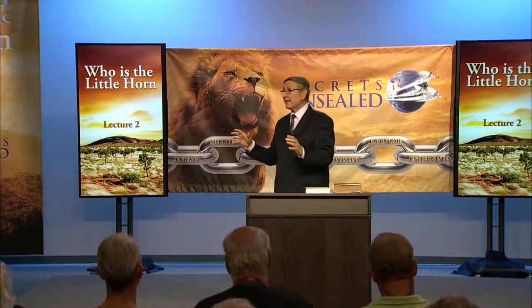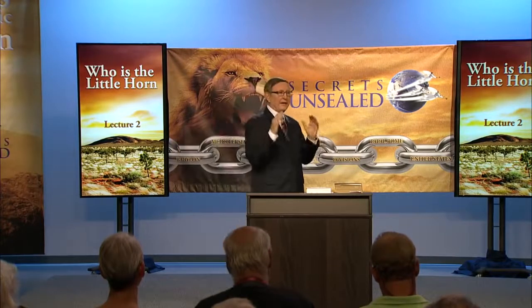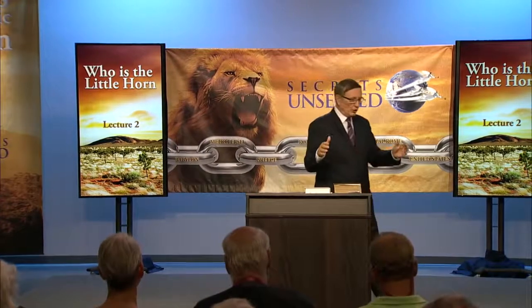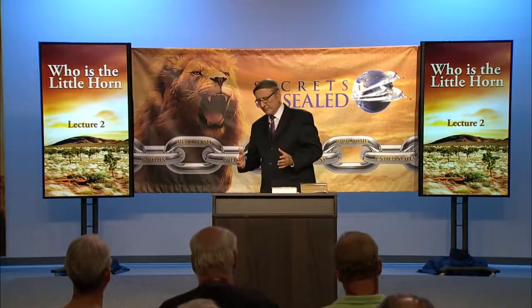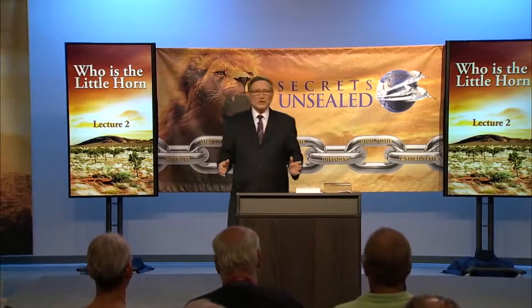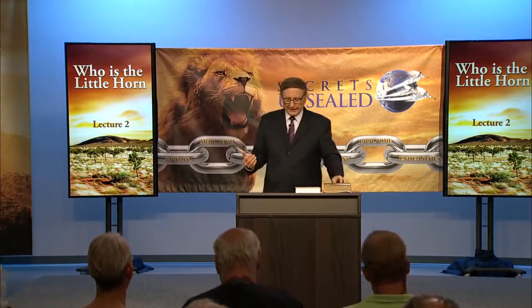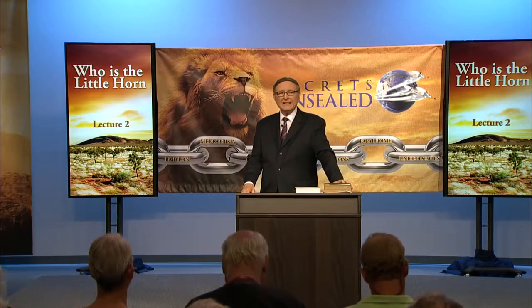So in our study today we are going to attempt to define what is meant by the little horn. We already know that the lion is Babylon, the bear is Medo-Persia, the leopard is Greece, the dragon beast is Rome. The ten horns represent the ten divisions of Rome. But the question is, what is represented by the little horn? I'm going to share with you seven characteristics of the little horn. I'm going to list them first of all, and then we are going to look at each of them more carefully.